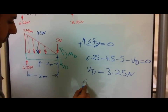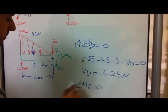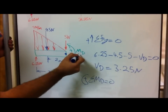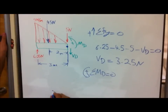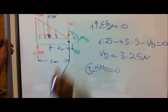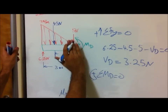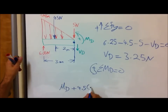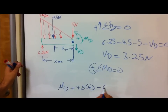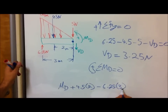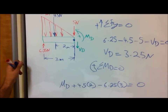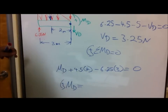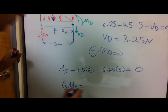Then we do the moment at D equals zero with counterclockwise as positive. The external forces acting right at point D don't contribute a moment arm. So: M-D plus 4.5 times 2 minus 6.25 times 3 equals zero. Solving, the moment at D equals 9.75 N·m.